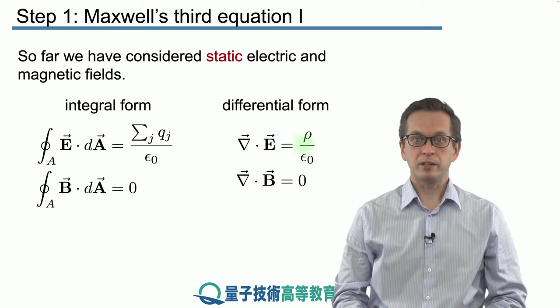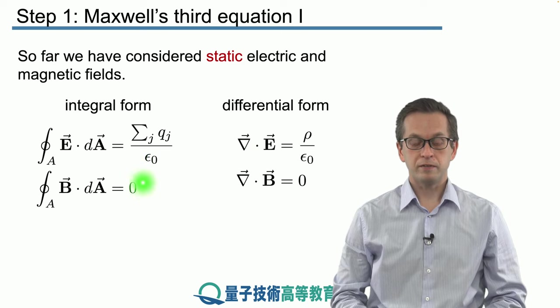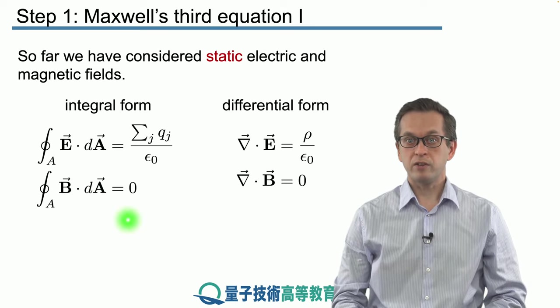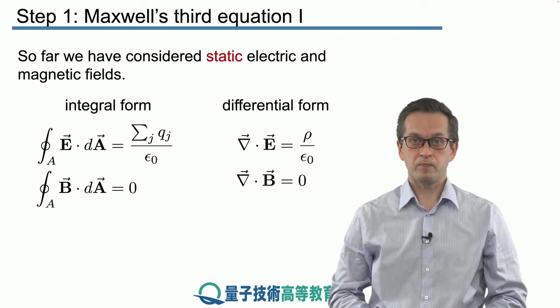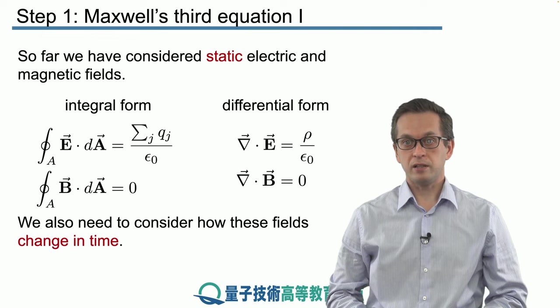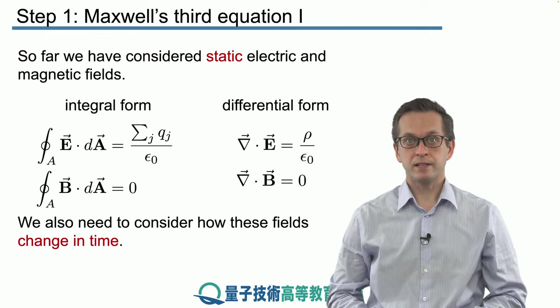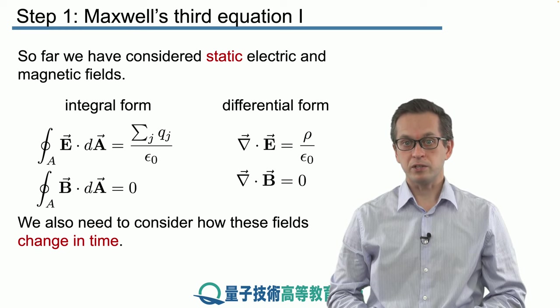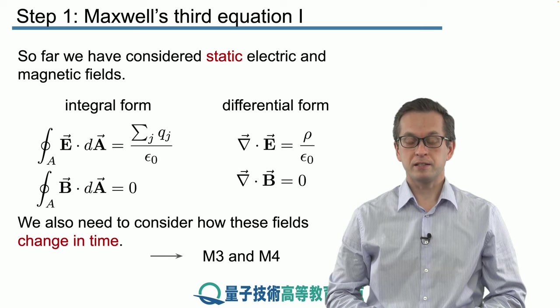Similarly for the magnetic field, we saw that the flux of the magnetic field through an enclosed surface is always equal to zero because there are no magnetic monopoles, and equivalently its divergence in the enclosed volume is also equal to zero. But there is no time dependence in these equations. If the time changes the fields are still static. So this is the job of the last two Maxwell's equations which we are going to derive in this lesson.